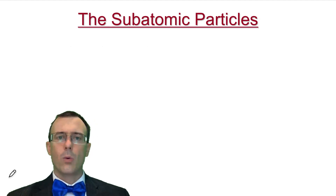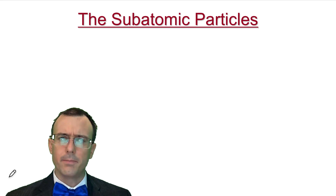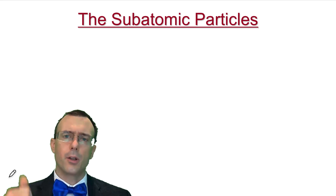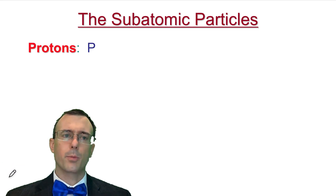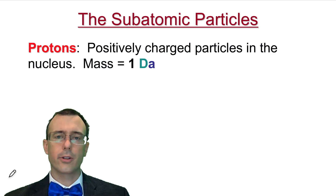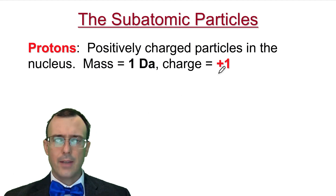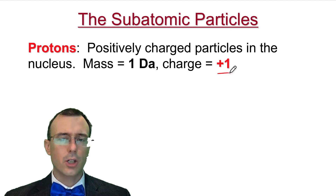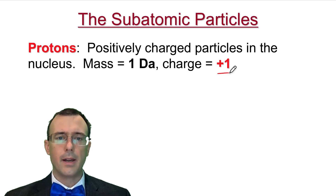I want to review the subatomic particles. What are they again? Your protons, neutrons, and electrons. Your protons, as we've already learned, they're positively charged, and they're in the nucleus, and they have a charge of positive 1. The number is important — it's positive 1.